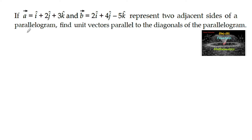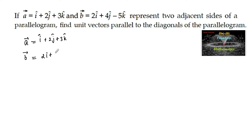If vector a is equal to i plus 2j plus 3k and vector b is equal to 2i plus 4j minus 5k, these represent two adjacent sides of a parallelogram. Find unit vectors parallel to the diagonals of the parallelogram.